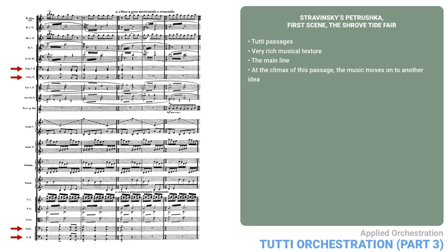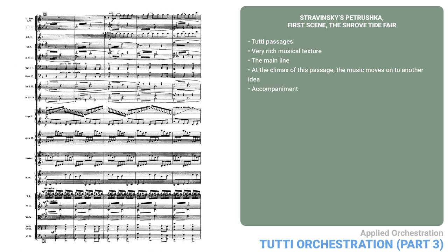The new idea has actually been anticipated in the lower strings and woodwinds on page 3. The accompaniment is what I want to focus on here, since we haven't yet looked at this kind of textural orchestration. By textural, I mean a rich tableau where no one instrument really dominates. The point is more to create the impression of a crowd, which is the visual idea behind this passage, where everyone is moving, but not all in the same way. Let's look at each element in the texture.